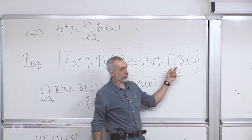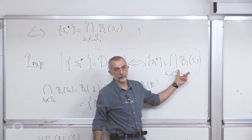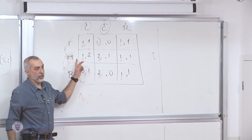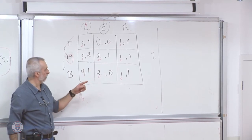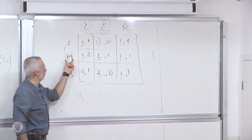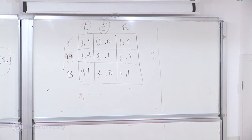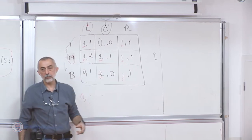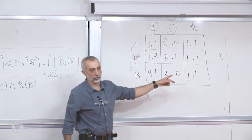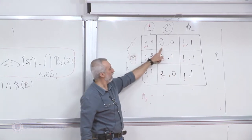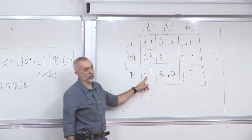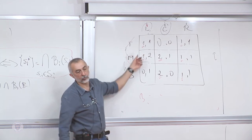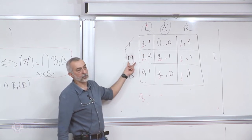What does it mean for a strategy of player 1 to be in the intersection of the best responses? The whole row should be marked. There's a row where every number corresponding to player 1 is marked — that means M is in the intersection. But more than that: the intersection should only contain M. The whole row should be marked, and there should be no other row which is all marked. So by looking at this picture, I can conclude that M is in the intersection of the best responses. Hence, M is a dominant strategy of player 1.